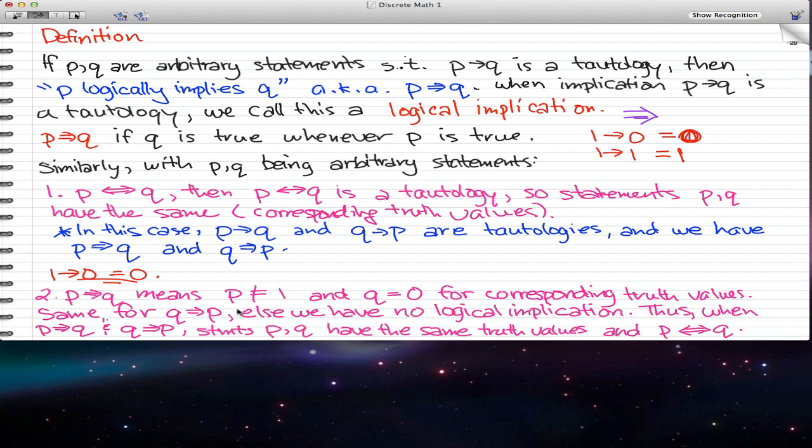That's the same for Q implies P. So Q can never be 1, and P can never be 0 for their corresponding truth values. Else, if that occurs, then we have no logical implication. We get a 0 if that happens. Thus, when P logically implies Q, and Q logically implies P, then the statements P, Q have the same truth values, and thus P is logically biconditional to Q.